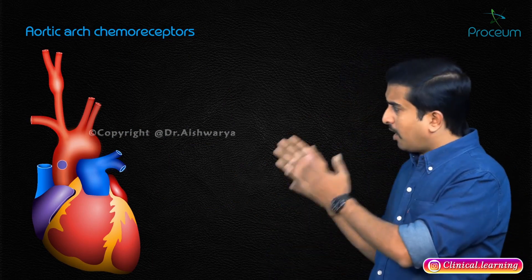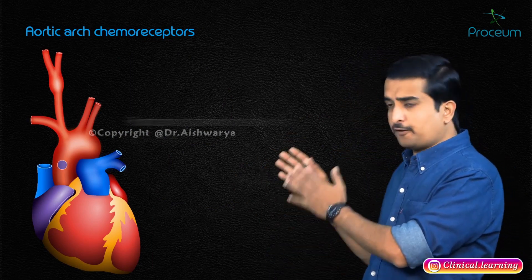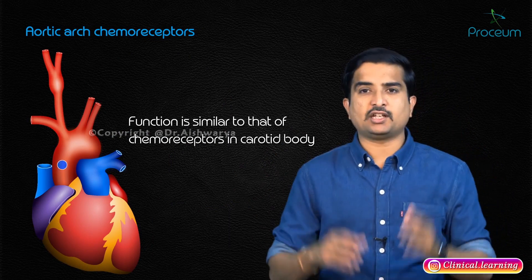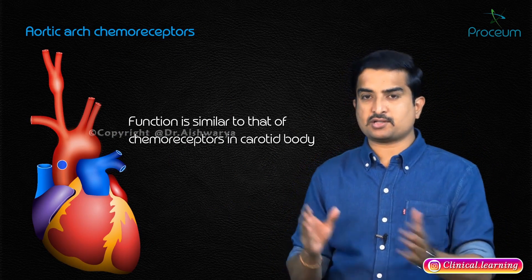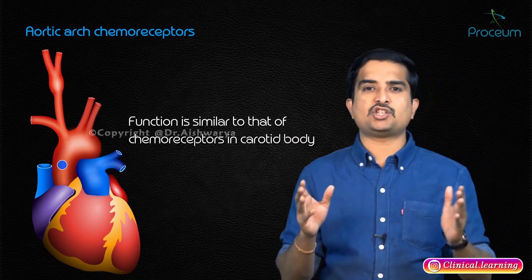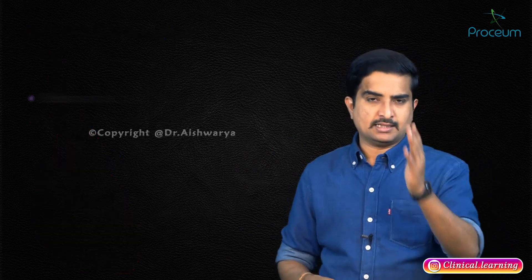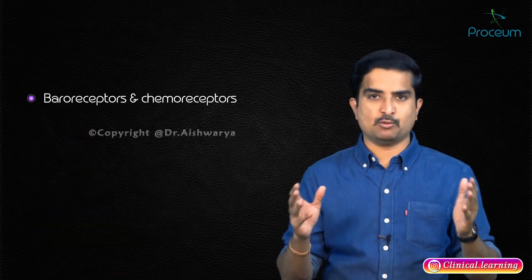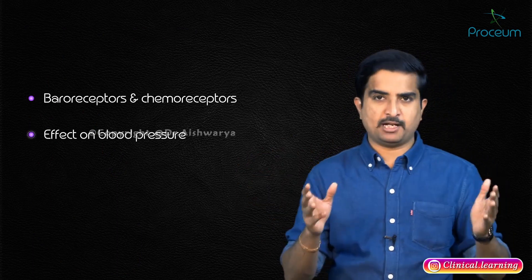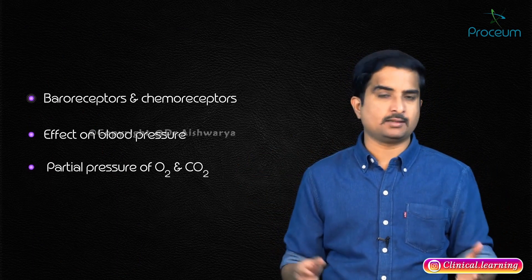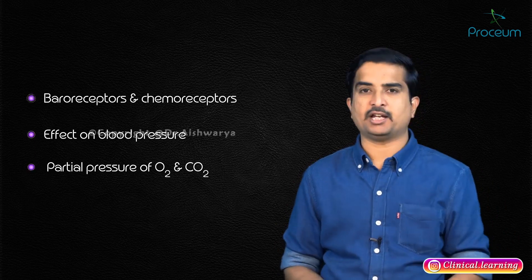The aortic arch chemoreceptor function is similar to that of the chemoreceptors in the carotid body. This summarizes what you need to know about baroreceptors and chemoreceptors, and their effects on blood pressure as well as the partial pressure of oxygen and carbon dioxide.